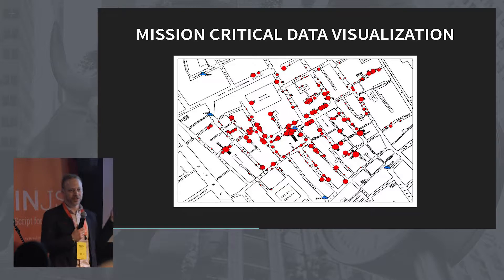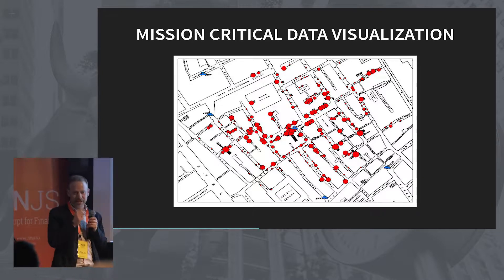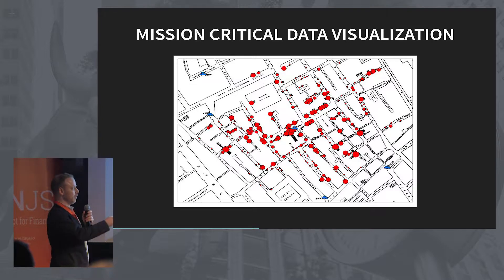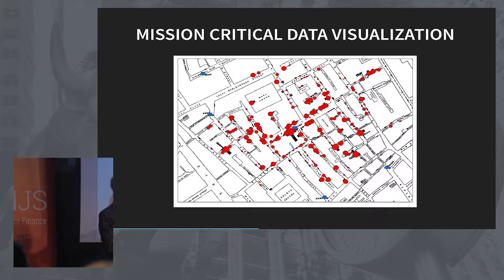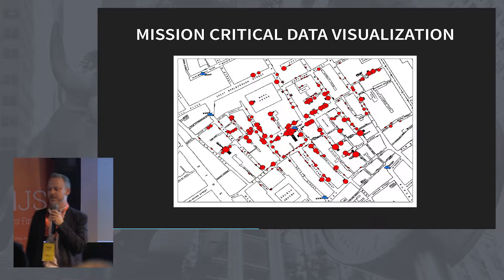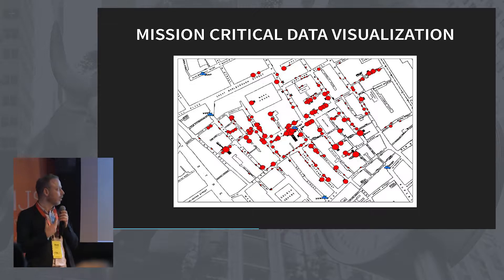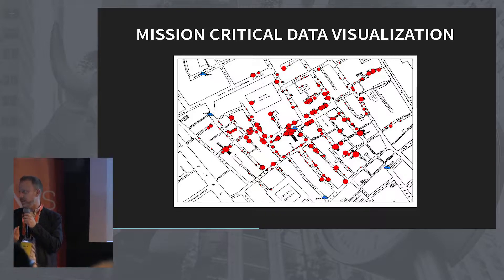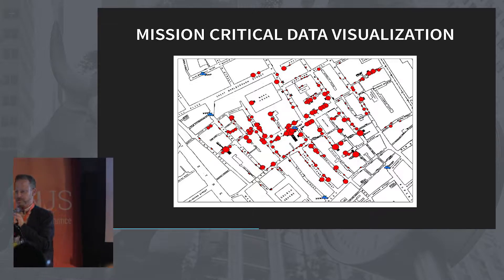This is a map created by Dr. John Snow — I'm not making that up — in London, 1854, during the cholera epidemic. What this guy did is he mapped out all the places where there had been instances of cholera. He noticed these are wells, and he was able to take a dataset and, by putting it on a map, tell what the source of the cholera epidemic was. They could do something about it. This was the start of epidemiology and really the start of data visualization.